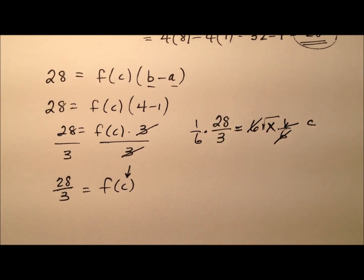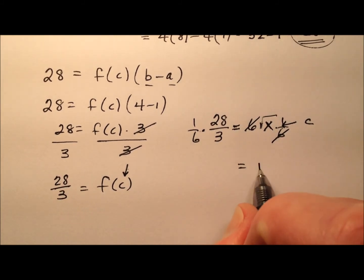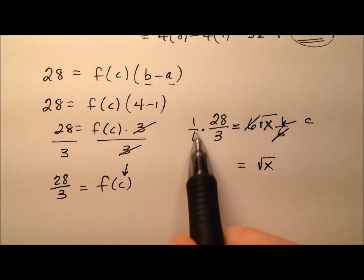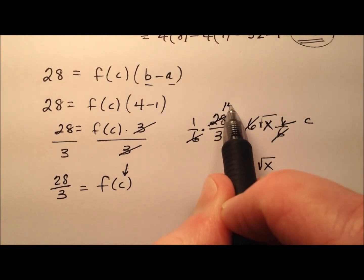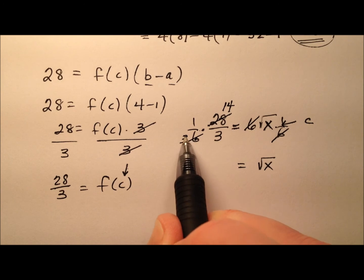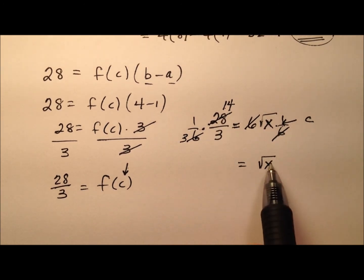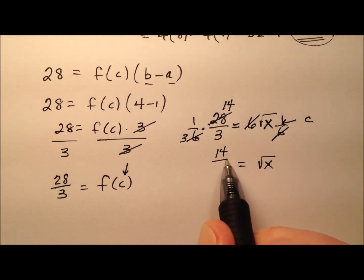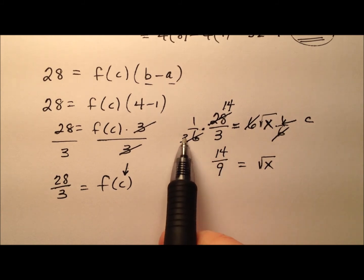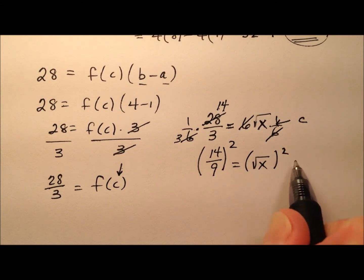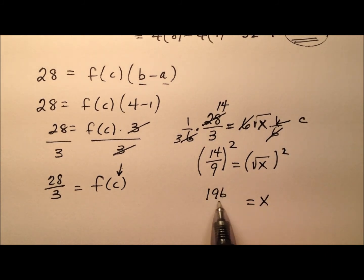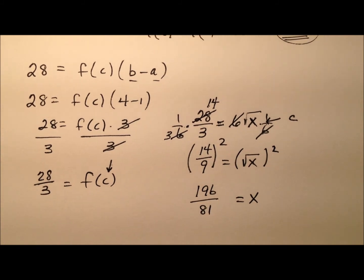Let's start by multiplying both sides by 1 sixth. When I do that, those sixes cancel on the right side. I'm just left with the square root of x. On the left side, I can factor and cancel a 2 out of each of these. So we'll end up with 14 over 3. The square root of x is going to be 14 ninths when I do 3 times 3.